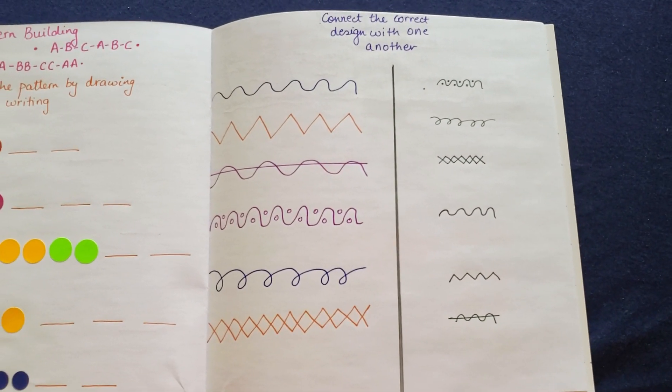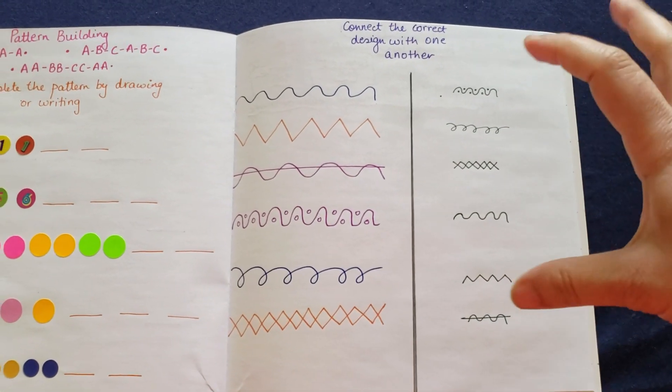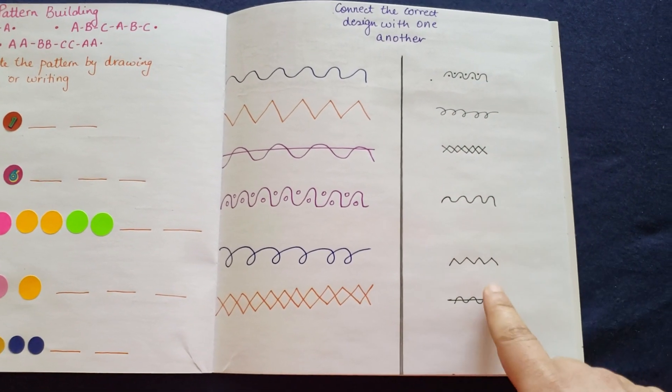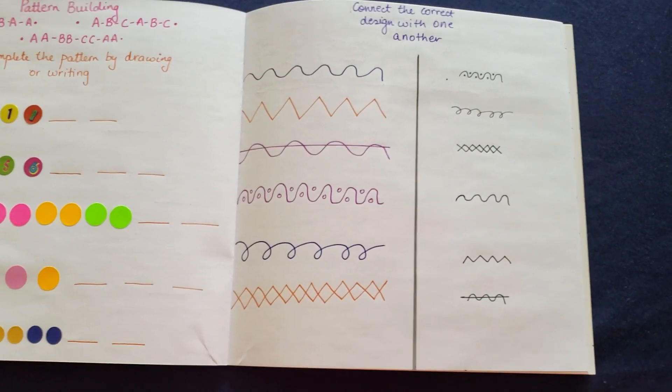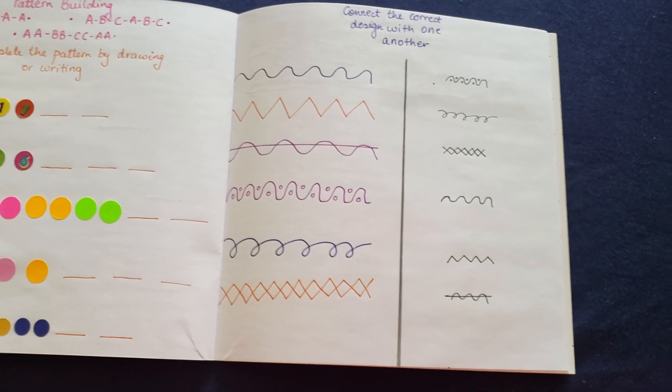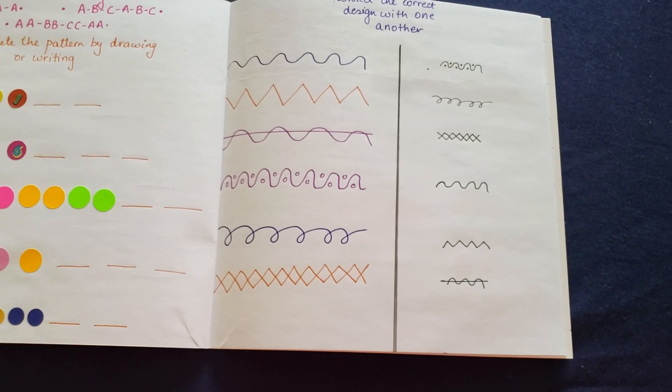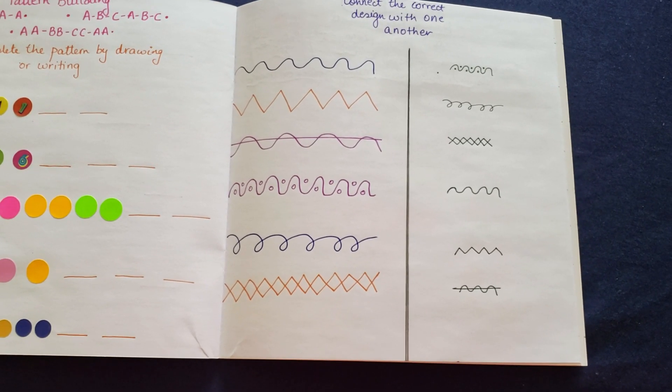Okay, then it says connect the correct design with another one. So you have six designs here and their pieces are incomplete. You have to find the right one here and match it to the correct one to complete the design. Do not think that it's very easy for kids. Lines and patterns and designs can be very deceiving. They might see all of them very similar. So I think it's going to be a great activity for her to do.